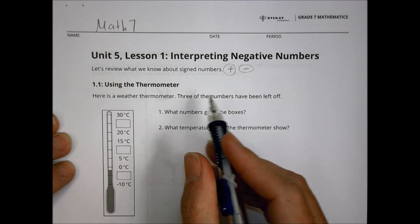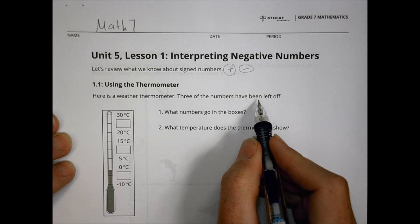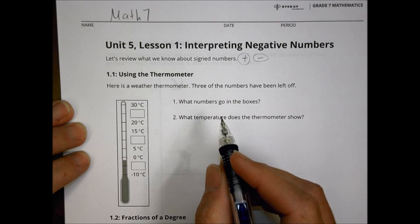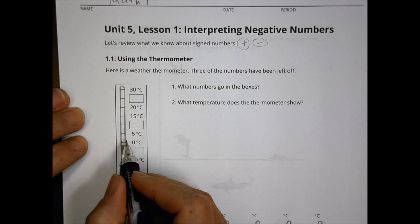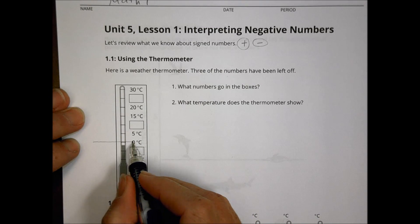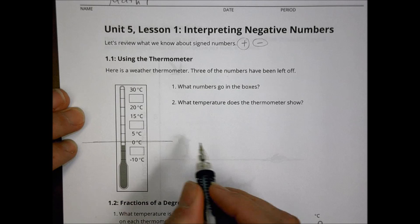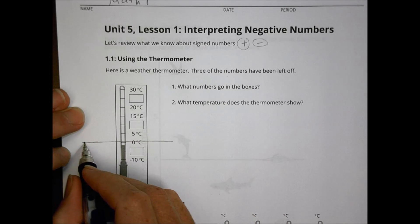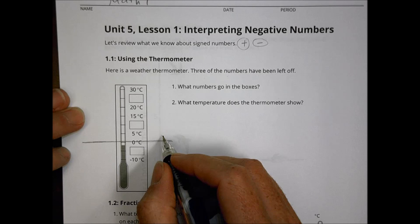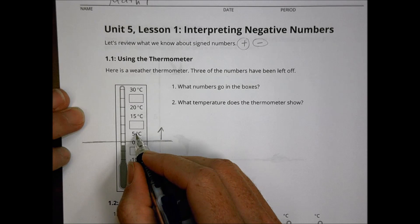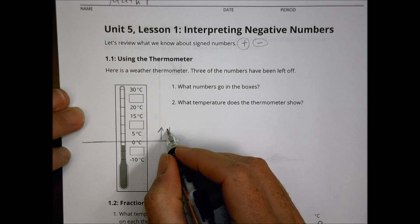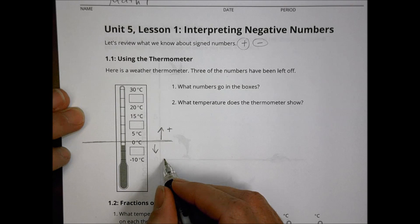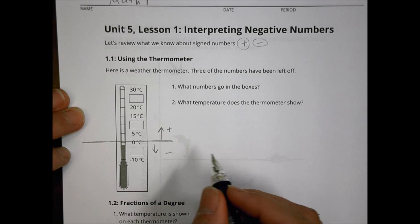We begin with the weather thermometer. Three of the numbers have been left off — what numbers go in the boxes? When we take a look at this thermometer, we can see that 0 is our center point. Everything that goes upward is a positive number: 5, 15, 20. Everything below this line, like negative 10, is a negative value.